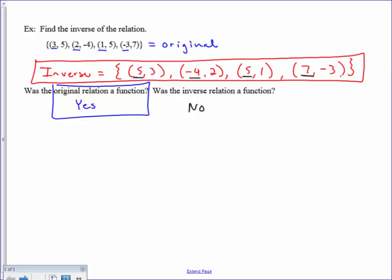So we're going to say not a function because 5 is assigned to two different y values.